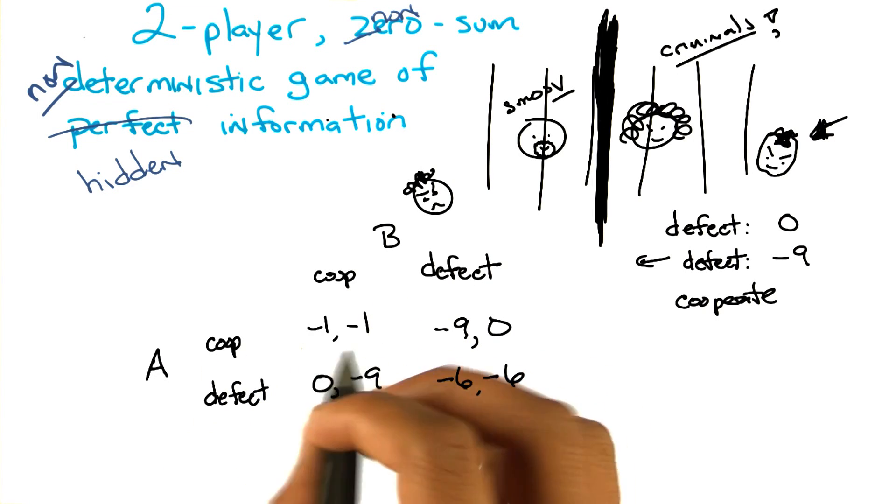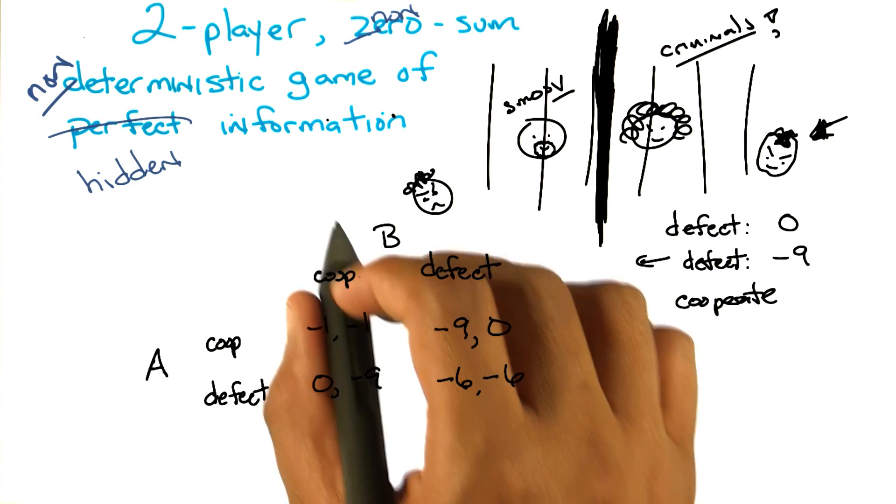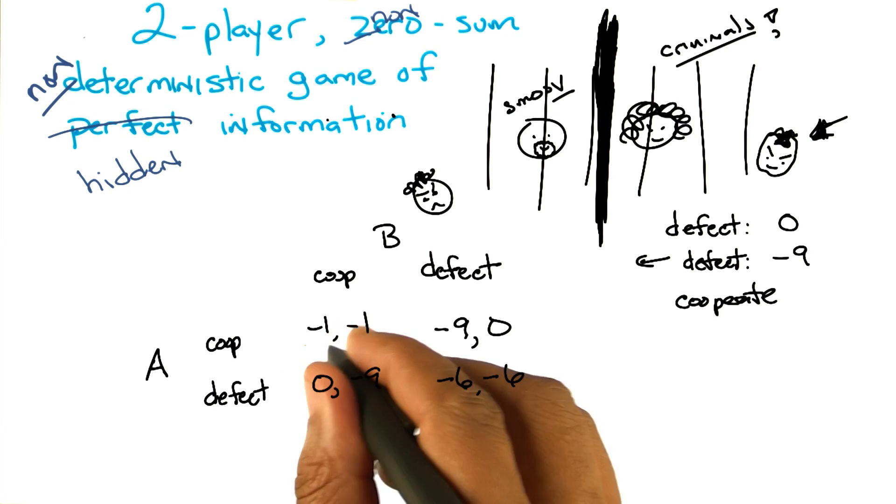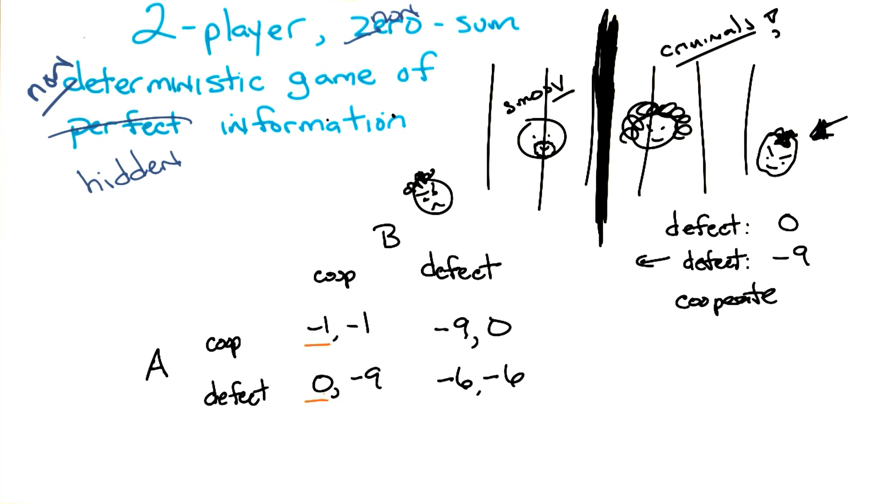If I look at the value for me as A between cooperating and defecting in this first column, it's minus 1 versus 0. Which number is bigger? 0. Right.